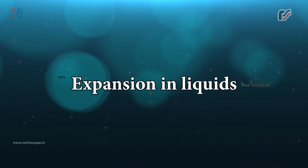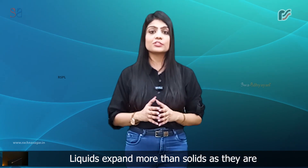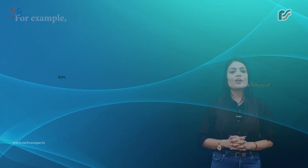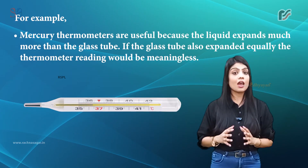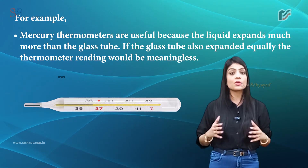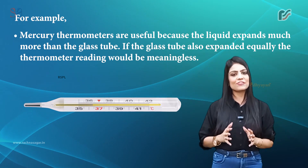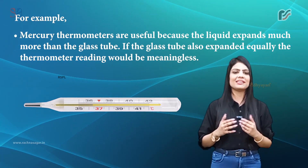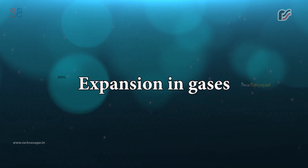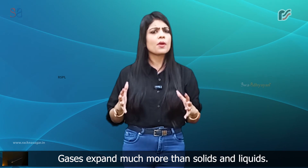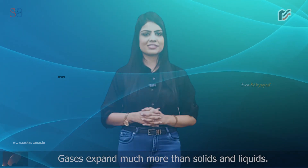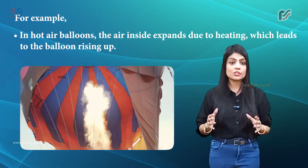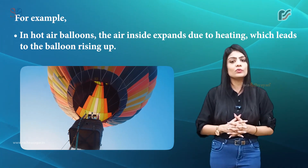Expansion in liquids: Liquids expand more than solids as they are comparatively loosely packed. For example, mercury thermometers are useful because the liquid expands much more than the glass tube. If the glass tube also expanded equally, the thermometer reading would be meaningless. Expansion in gases: Gases expand much more than solids and liquids. For example, in hot air balloons, the air inside expands due to heating, which leads to the balloon rising up.